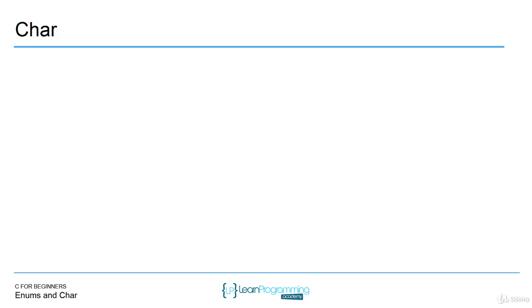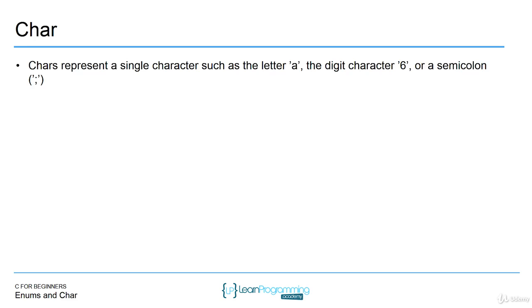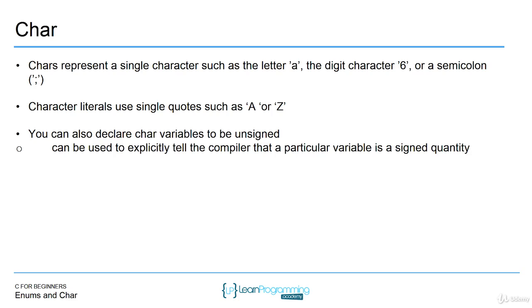Another important data type is char — we've talked mainly about numeric data types and now the enum. Char represents a single character, such as the letter a, the digit character six, or a semicolon. You'll notice these single quotes — the reason we know they're characters, even though one is a number, is because it's in single quotes. Anything inside single quotes in a program is referred to as a character data type. Characters will typically be alphanumeric, but they can be actual numbers or other keyboard characters. You can also declare character variables to be unsigned, meaning they can't be negative — because characters can be represented as numbers in the ASCII table.